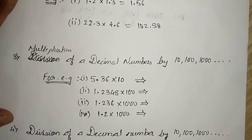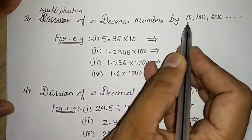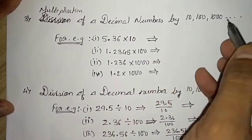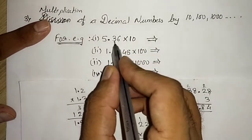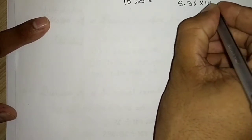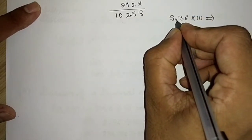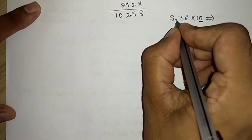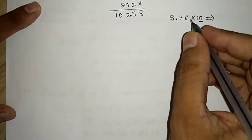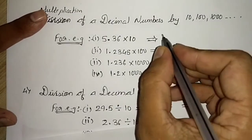Now let us look at multiplying a decimal number by 10, 100, 1000, and so on. Take 5.36 × 10. In 10, there is one zero, so you shift the decimal point one place to the right. You get 53.6.